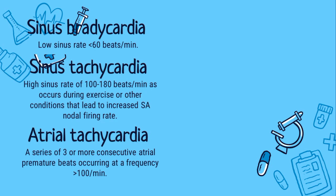Another arrhythmia is the atrial tachycardia. It is a series of three or more consecutive atrial premature beats occurring at a frequency of more than 100 per minute. This is usually due to abnormal focus within the atria and paroxysmal in nature. Hence, this type of rhythm includes paroxysmal atrial tachycardia.